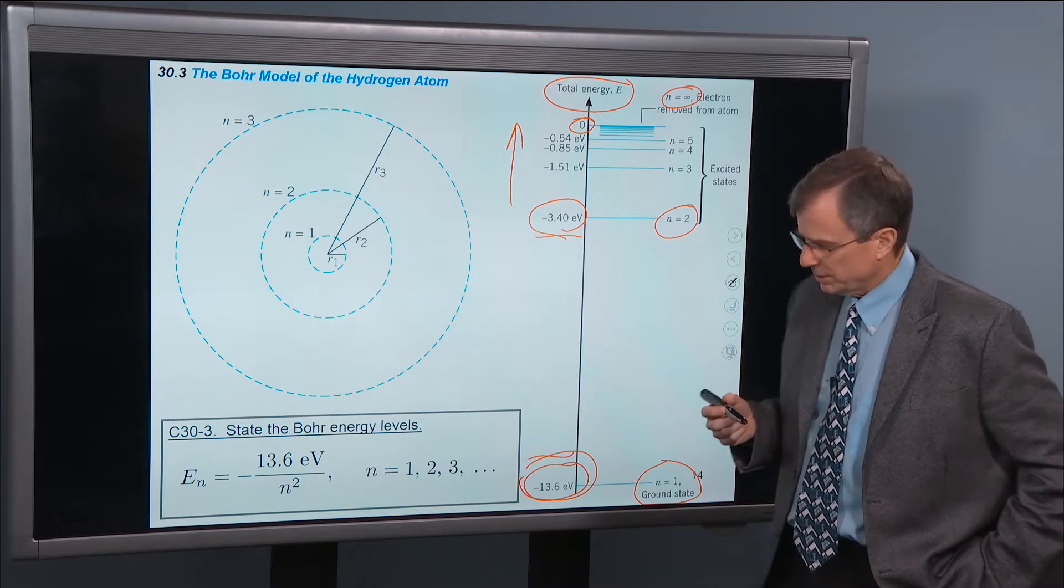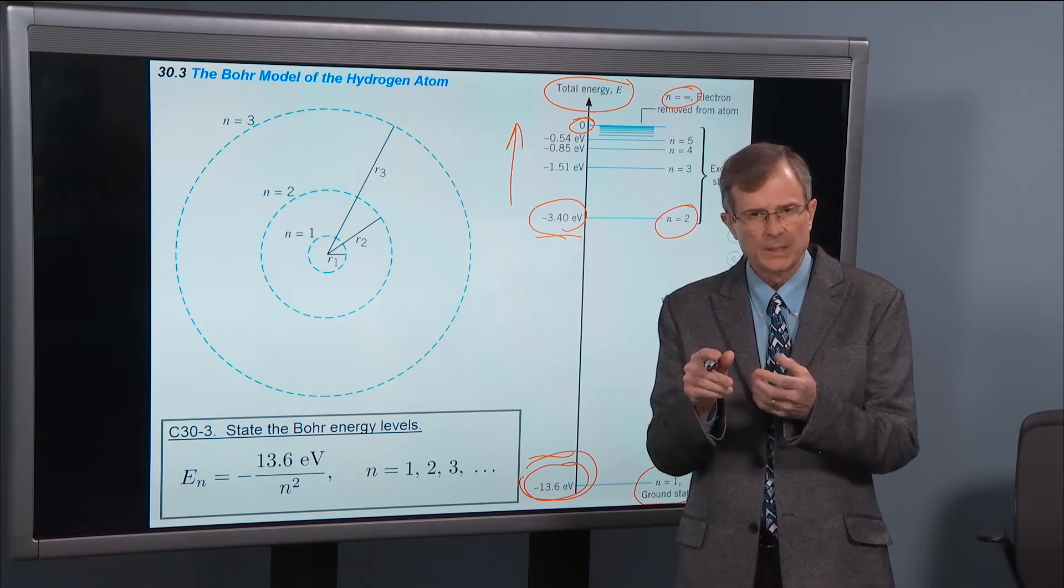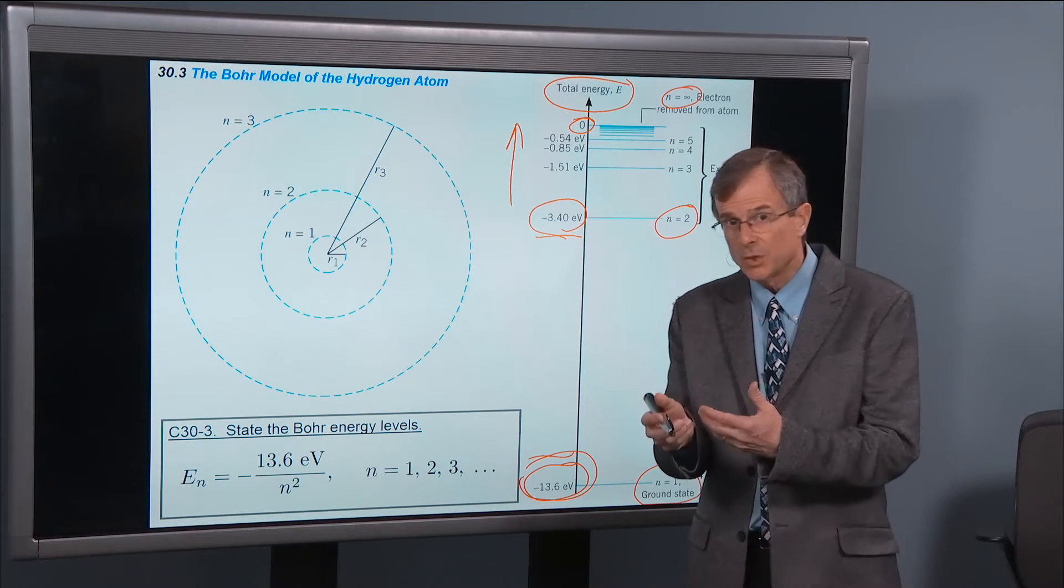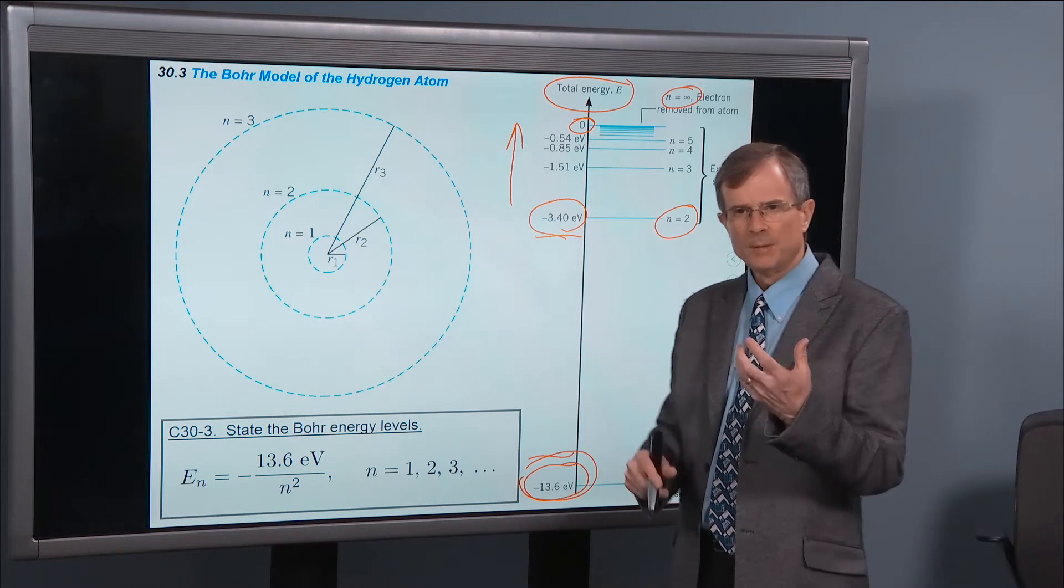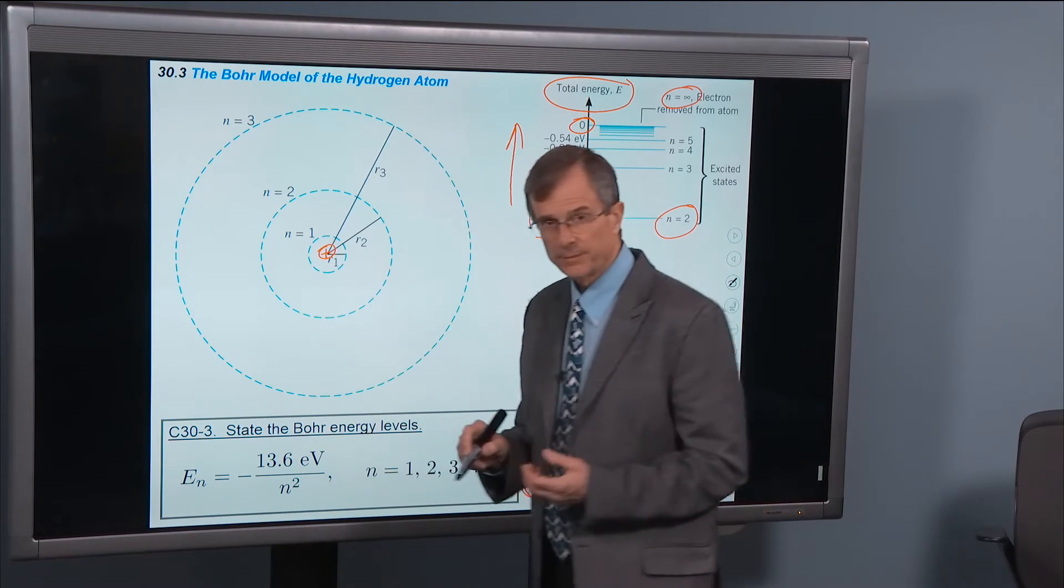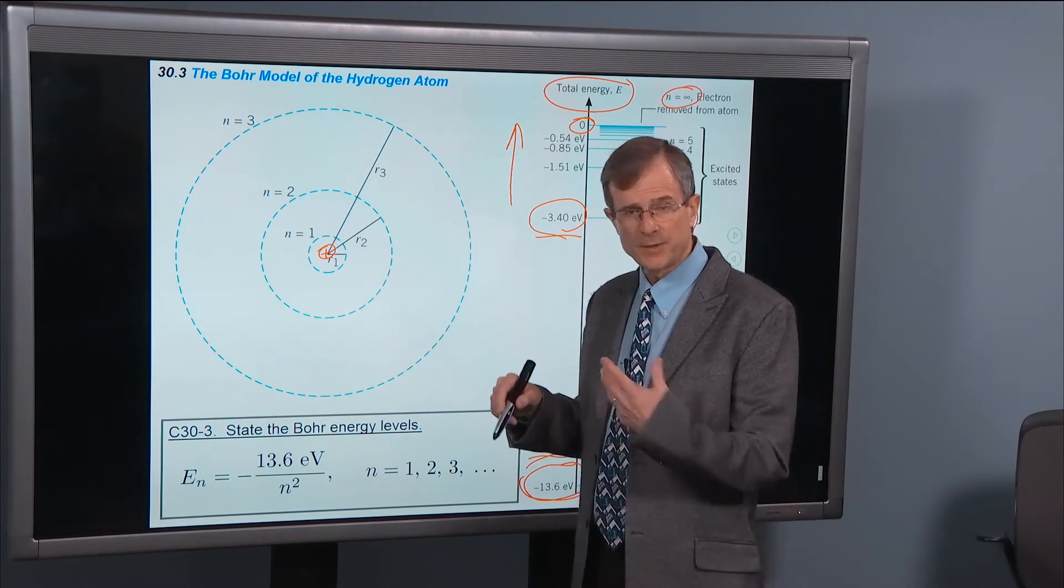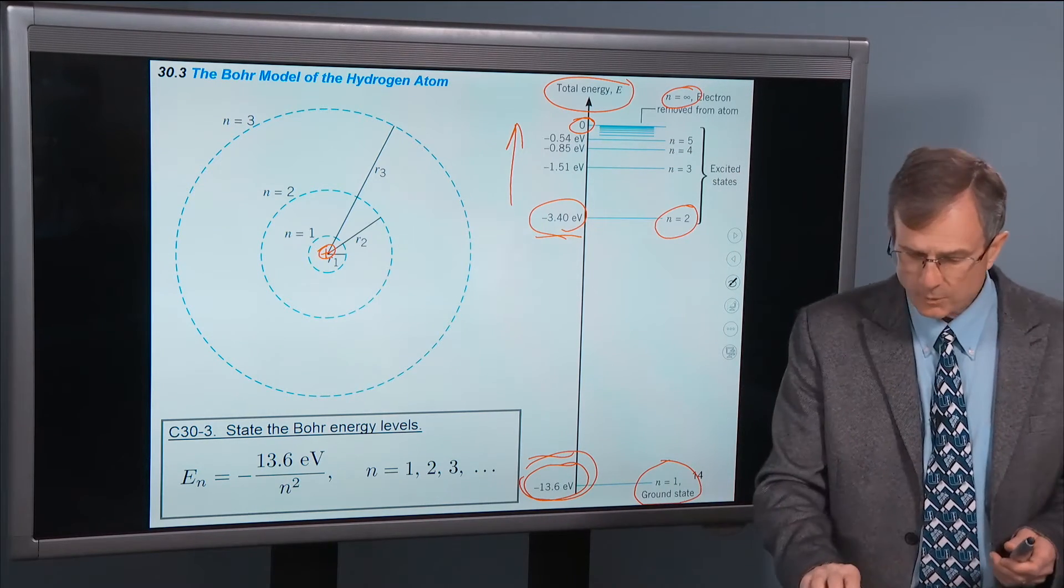And that's the threshold of ionization. So that's how much energy you have to dump into a hydrogen atom that's in its ground state in order to free the electron from the hydrogen atom. Remember, the hydrogen atom is just one proton in the center that is the nucleus, and then one electron in these various orbits.